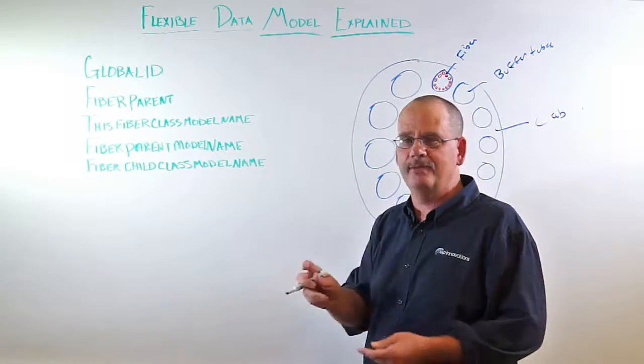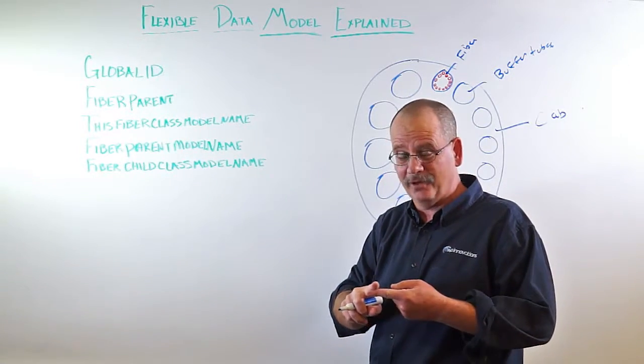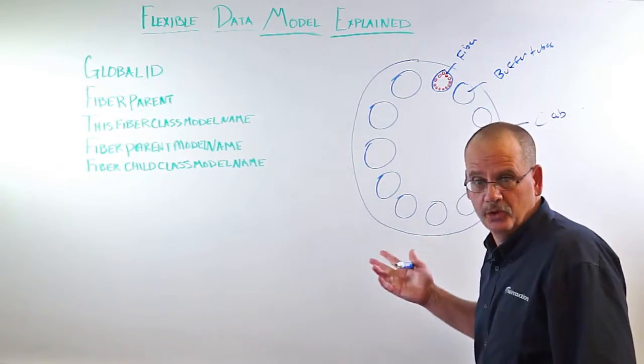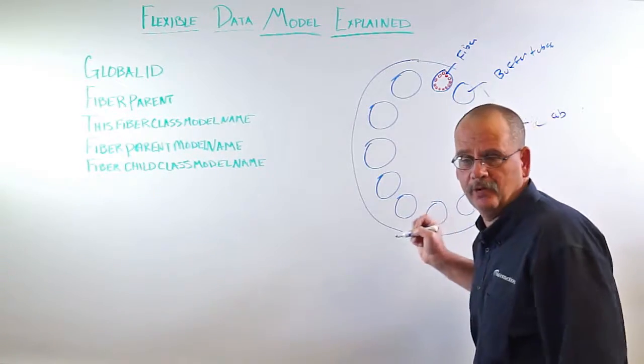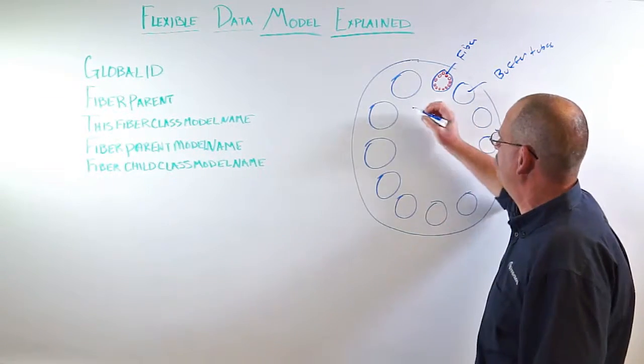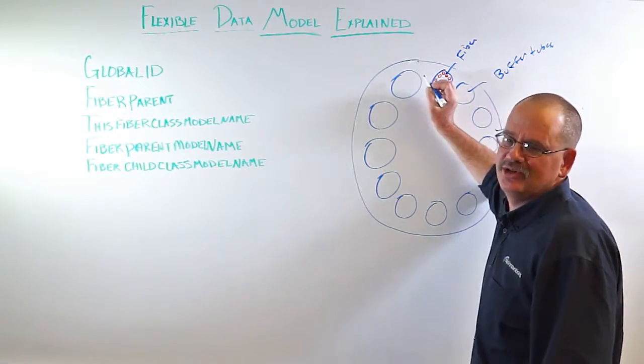In essence, we can pretty much build any type of equipment that is presented to us. If we wanted to, we could set up a fiber optic cable to not even use buffer tubes by setting the parent of a strand to the cable.